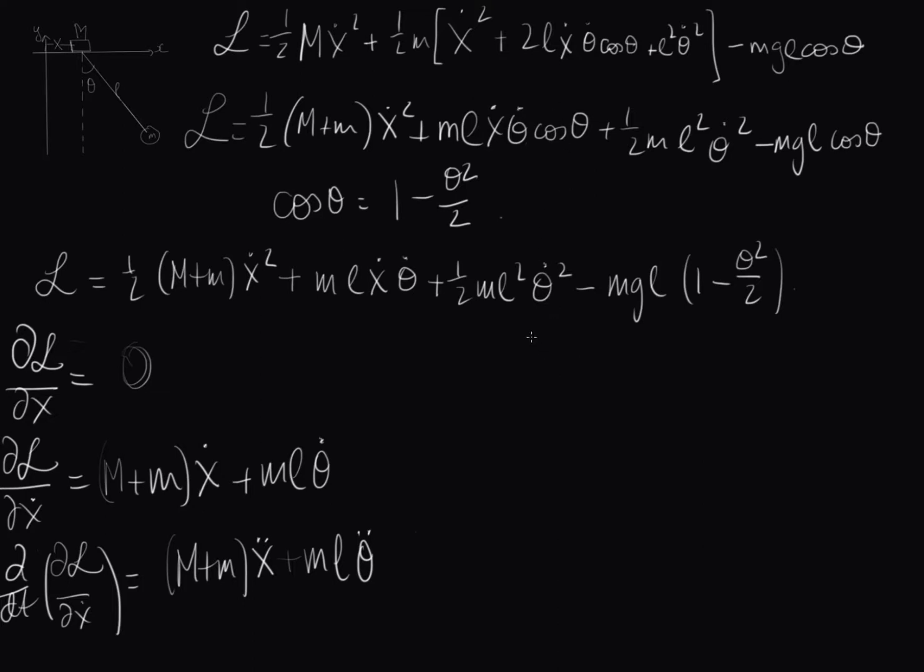Okay, so now let's have a look at the theta components. So DL d theta, no theta here, no theta here, no theta here, but unfortunately it does crop up once, so we do have to put it in. So if we differentiate this, we'll see that we get M G L theta, and now if we find DL d theta dot, no theta dot here, here we go, so this becomes M L x dot plus M L squared theta dot.